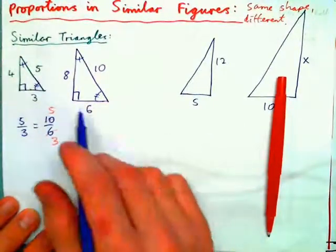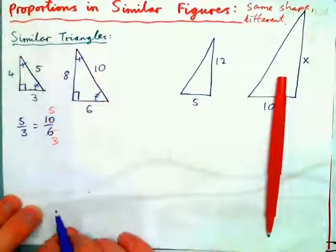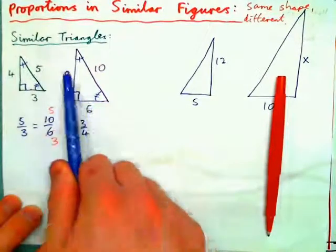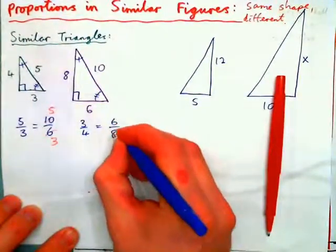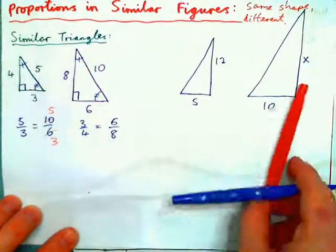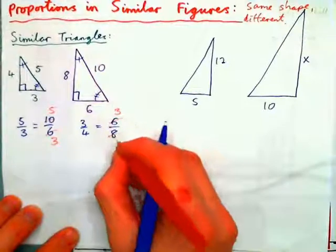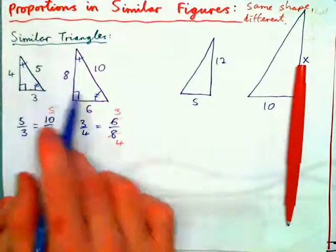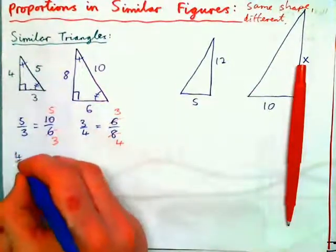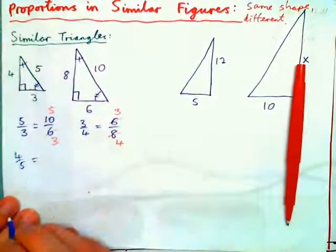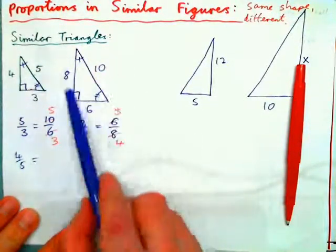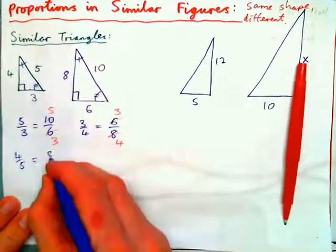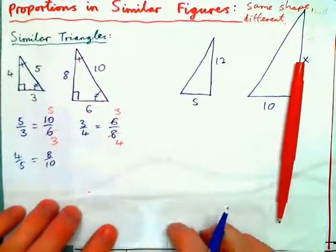There are lots of proportions we can find with these two triangles. We could do 3 over 4 — this side over this side equals this side over this side, which equals 6 over 8. Put that in lowest terms: 2 into 6 goes 3 times, 2 into 8 goes 4 times, so 3 quarters equals 3 quarters. You could also do 4 over 5 equals 8 over 10. So there are all sorts of proportions with these two similar triangles.